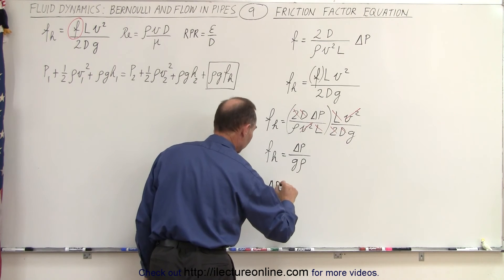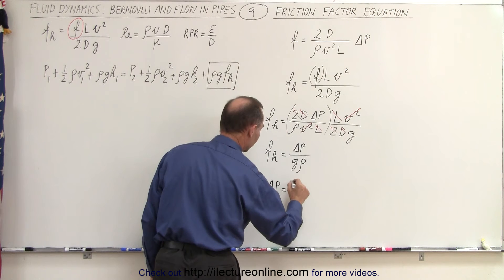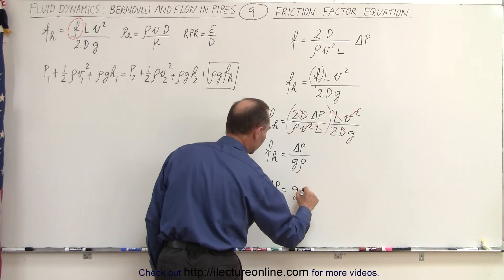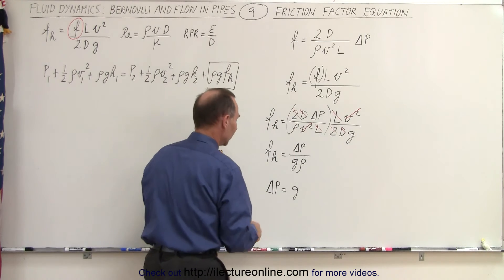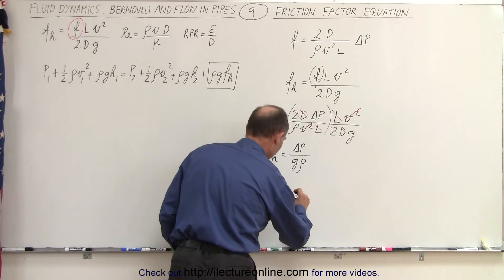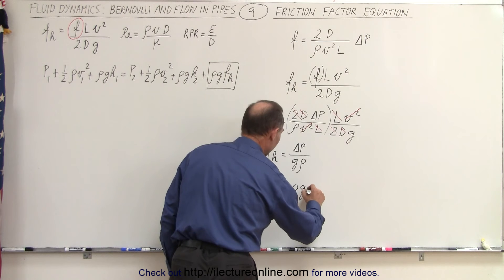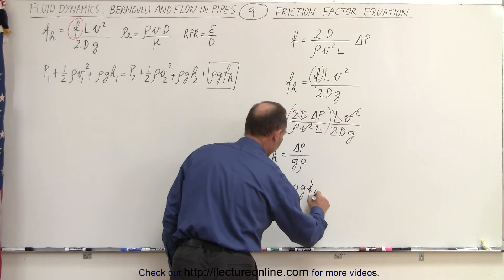we can see that the change in the pressure caused by the frictional head loss is equal to G times delta. I guess we write delta first, so let's go ahead and do that. So the density, the density times G times the frictional head loss.